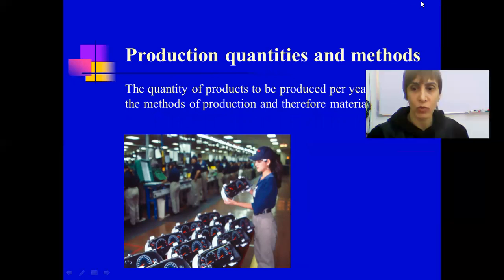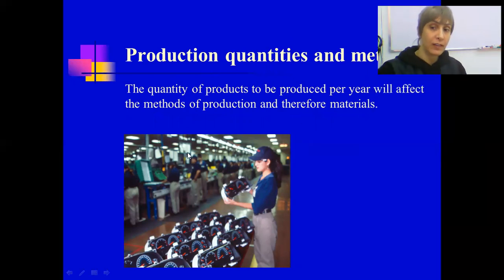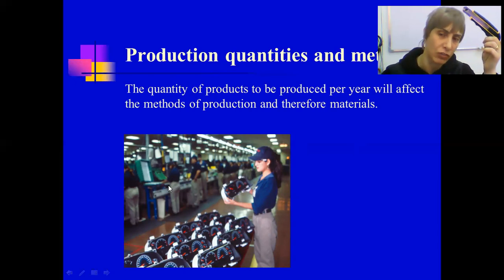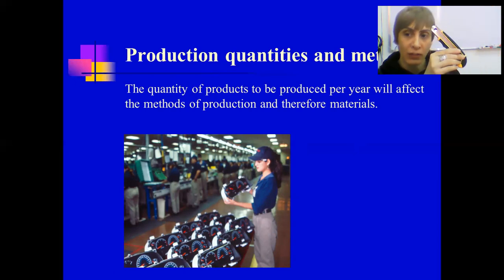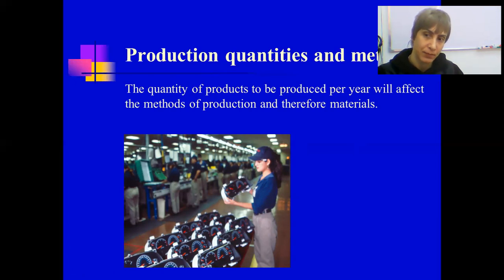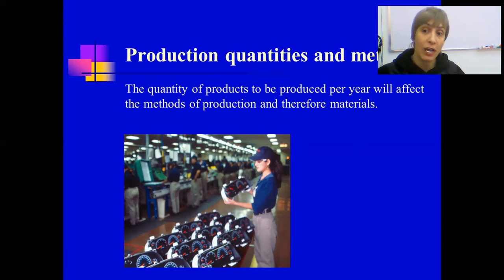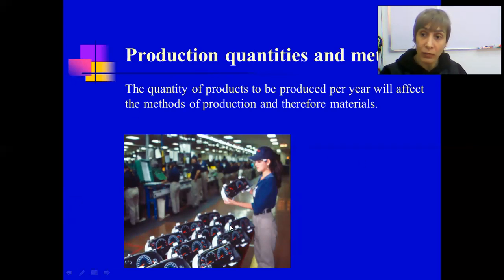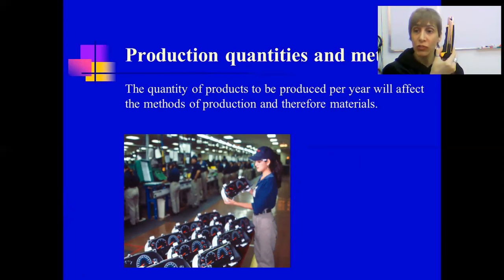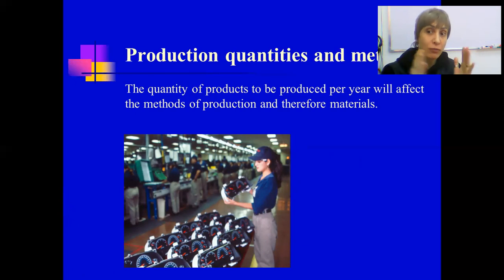Production quantities and methods. This is also something that influences the choice of materials. How many of this product will be manufactured? This relates to how many people will be using it — what is your target group? If your target group is millions of people all over the world, this means huge production quantities. This influences what materials you will choose. It's different if you produce just five of these versus 50 million.